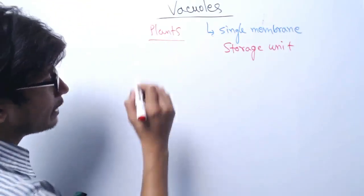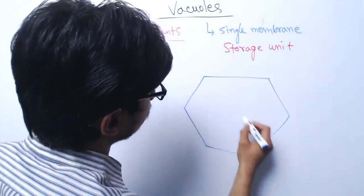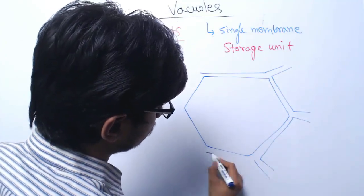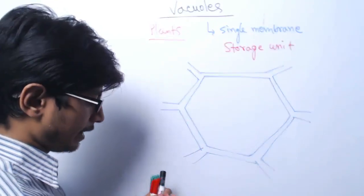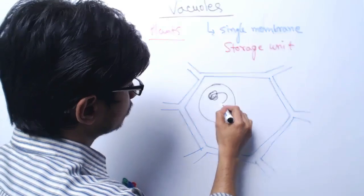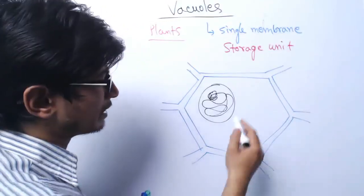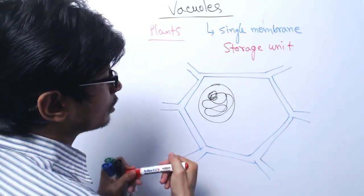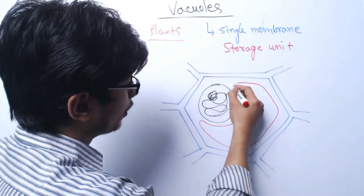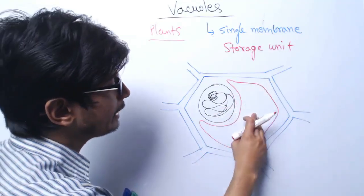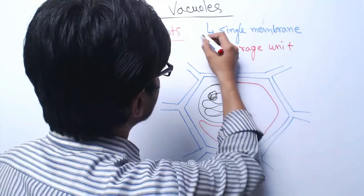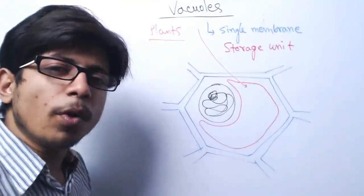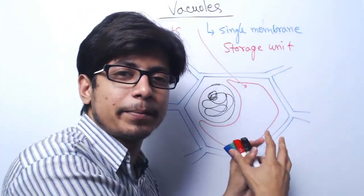Vacuoles are very predominant in plants. Now, if I look at the structure of a vacuole in a plant cell, it will look something like this. Let's say this is the structure of a plant cell — here is the nucleus, and other organelles like mitochondria are present. The vacuole consists of almost 80% of the volume of the cell. The cytosol is present in very little amounts in plant cells, filled mostly with this large vacuole.